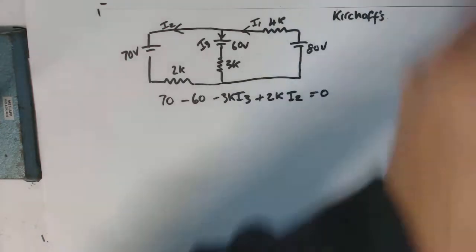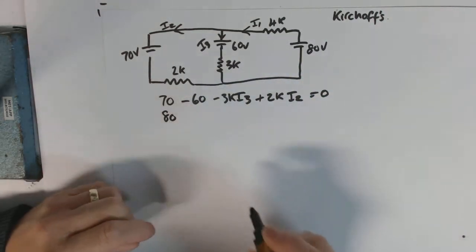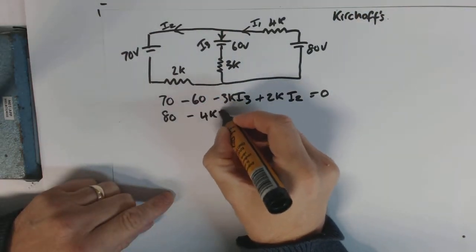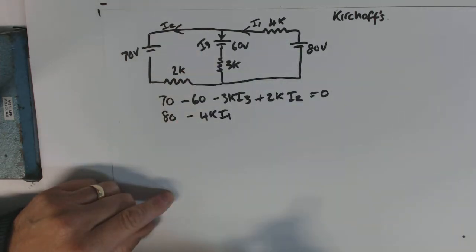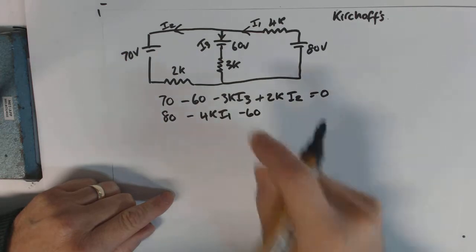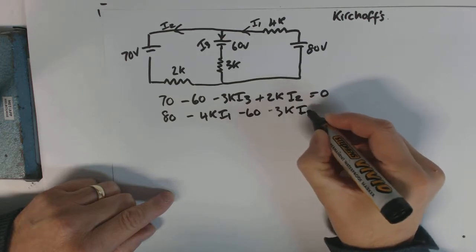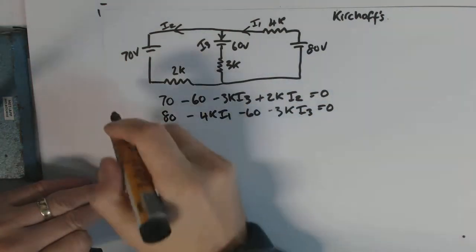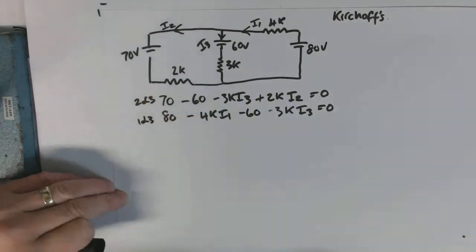The next equation, doesn't matter probably which equations you end up doing. I've started with that 70, let's go with the 80. And we're coming out from the positive again, so we'll go 80. We're going with the current, so we go minus 4k I1. Then again we go positive negative, we came out of a positive, we come out of a negative it must be negative, so minus 60 volts again. Then we go through the resistor again, minus 3k I3 equals zero.